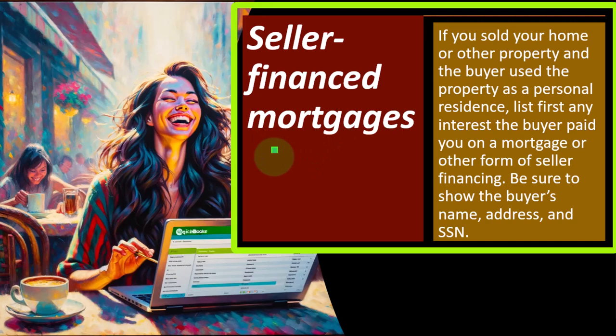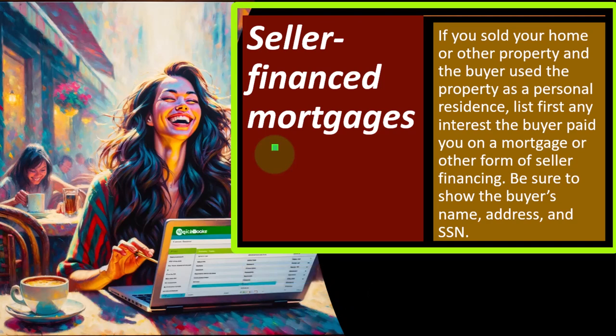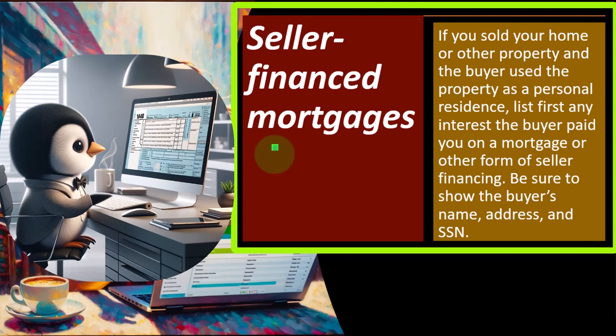List each payer's name and the amount. Don't report any tax-exempt interest on line 1. For more information on stated interest, OID, market discount, contingent payment debt instruments, and premiums, see Publication 550 and Publication 1212. Seller-financed mortgages: if you sold your home or other property and the buyer used the property as a personal residence, list any interest the buyer paid you on a mortgage or other form of seller financing. This is somewhat of an unusual situation — usually when you sell a home, the buyer takes out a loan from a financial institution, not from you.